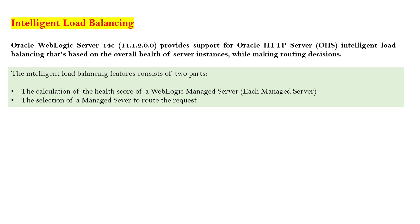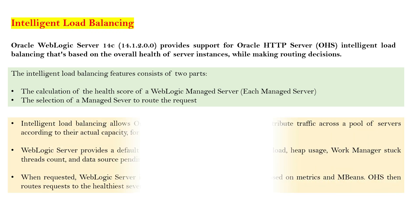The Intelligent Load Balancing feature consists of two parts: the calculation of the health score of each WebLogic managed server, and the selection of the managed server to route the request. There are certain changes introduced at the web server level — the OHS server — and also plugins introduced at the WebLogic level. Based on that, within a defined interval, each managed server will gather statistics about its own health, and based on those statistics, the OHS decides the routing mechanism.